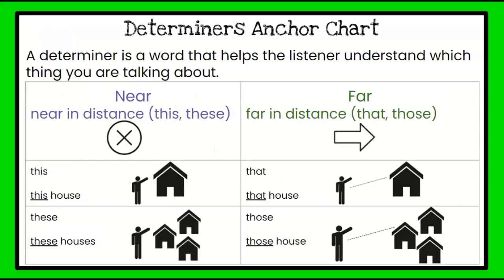This is our determiners anchor chart. A determiner is a word that helps the listener understand which thing you are talking about. Near is close to us — that would mean we would use words like this or these. You will use this if the noun is singular, which means only one. You will use these if the noun is plural — there are more than one. Far in the distance means things that are far away, and those determiners are that and those: that for a singular noun, only one, and those for plural nouns, more than one.